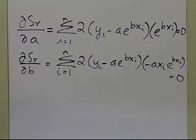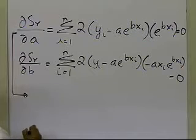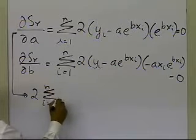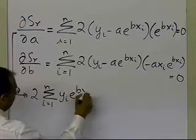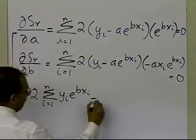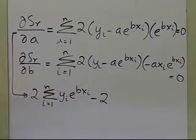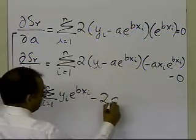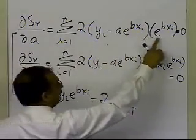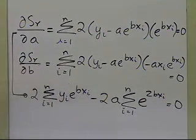Now I need to expand these equations. Looking at the first equation: I get 2·summation i=1 to n of y_i·e^(b·x_i), then minus 2a·summation i=1 to n of e^(2b·x_i), equal to 0. That e^(2b·x_i) comes from combining e^(b·x_i) times e^(b·x_i) — the bases are the same, so the powers are added.